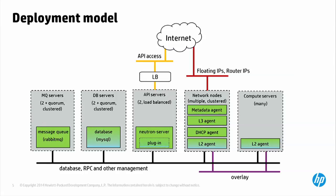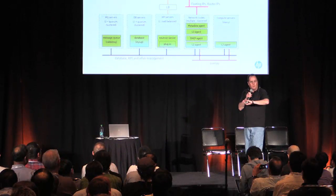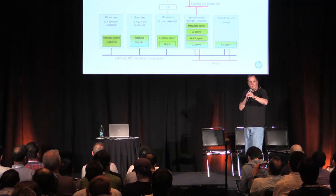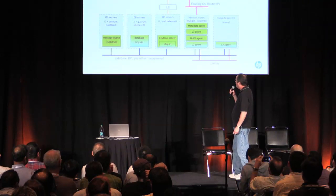Why aren't we using OVS or LinuxBridge with all that? Basically because it didn't exist two years ago when we started down this path. I would use it today, and we are actually moving in that direction with our new HP Helion OpenStack release. But I'm here to talk about the other 85% of the code, and the ratio of problems we ran into was roughly in that proportion — 85% in the common stuff, 15% in the proprietary code.